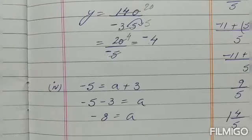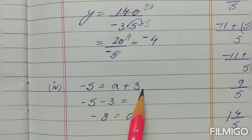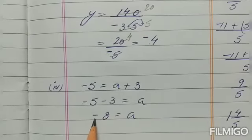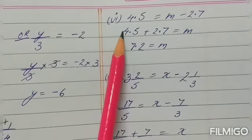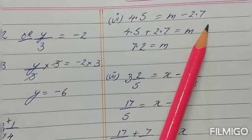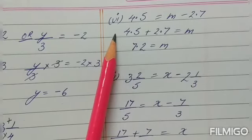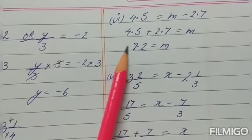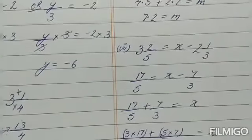The fourth subpart: a minus 5 equals plus 3. This plus 3 has to be removed from the variable side, so it comes to the other side as minus 3. Minus minus is plus — sign of the bigger value — so a equals minus 8. The sixth subpart: 4.5 equals m minus 2.7. This minus 2.7 comes to the other side as plus 2.7. Plus plus gives 7.2, so m equals 7.2, which is understood to be positive.